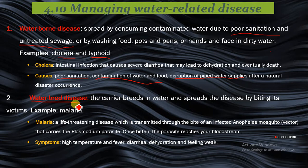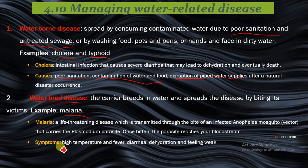Water-bred disease — the carrier is bred in water and spreads the disease by biting its victim. An example is malaria. Malaria is a life-threatening disease transmitted through the bite of an infected Anopheles mosquito — that's the female mosquito — which is the vector. It carries the plasmodium parasite, and once bitten, the parasite reaches your bloodstream. Symptoms include high temperature, fever, diarrhea, dehydration, and feeling very weak.